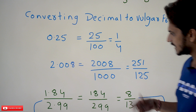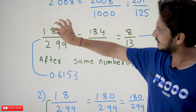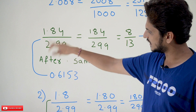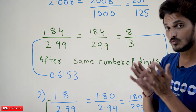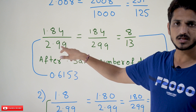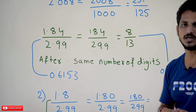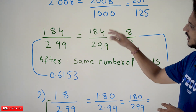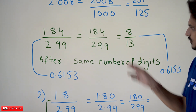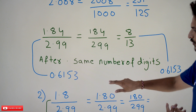One more example of another form: 1.84 divided by 2.99. Both have two digits after the decimal point. Since the number of decimal digits is the same, remove the decimal points and write it as 184/299. Simplifying — strike off common factors — gives 8/13. If you calculate 8 by 13, you get 0.6153, which matches 1.84/2.99.